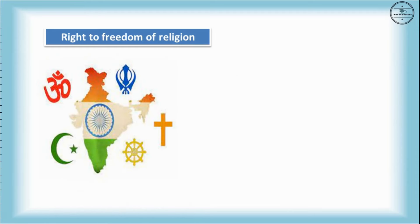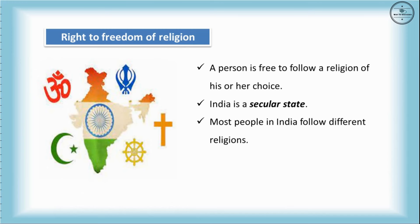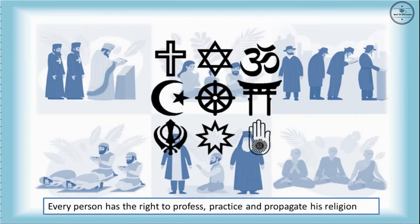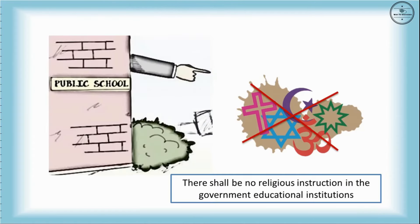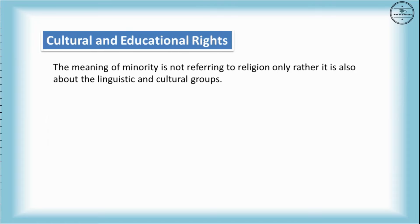The constitution gives the Right to Freedom of Religion. As per this right, a person is free to follow a religion of his or her choice. India is a secular state, and most people in India follow different religions. The government does not interfere in the religious matters of its citizens. Every person has the right to profess, practice, and propagate his religion. There shall be no religious instruction in government educational institutions.